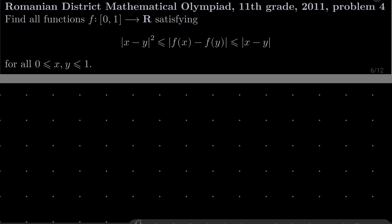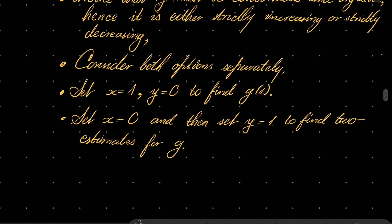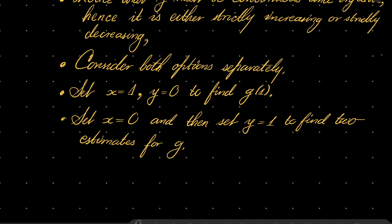It's a nice problem. Here are my hints. First, let g(x) be defined as f(x) minus f(0), and express our functional inequalities in terms of this new function g. Notice that we have additional information about g, namely g(0) equals 0. Then justify that g is continuous and injective, hence it is either strictly increasing or strictly decreasing — a fact from mathematical analysis. Consider both options separately. Set x to be 1, y to be 0 to find g(1). Set x to be 0 and y to be 1, find two estimates for g. And of course, do verification in the end.